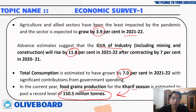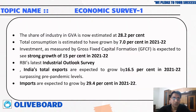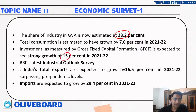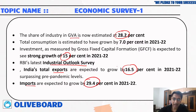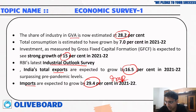These figures are what examiners typically ask. The share of industries in gross value addition is 28.2 percent. Gross fixed capital formation is expected to grow by 15 percent. RBI has given its latest Industrial Outlook Survey report. India's total exports are expected to grow by 16.5 percent and imports are expected to grow by 29.4 percent. These are very important numerical values.